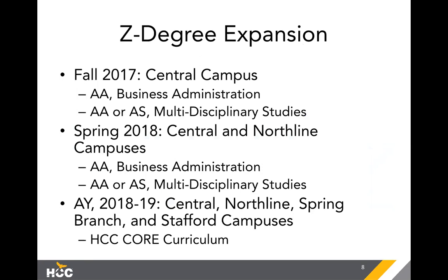Next year I'm focusing on two of our largest campuses: Spring Branch campus and Stafford campus. After central, those are our next largest campuses, with around 18,000–19,000 student enrollments per semester — they're big campuses.